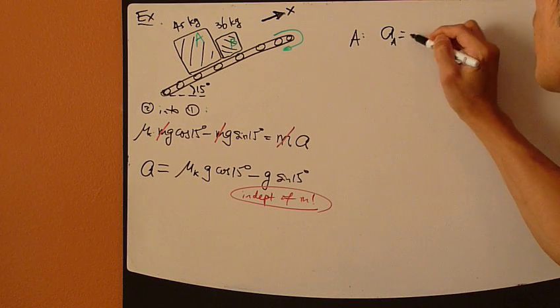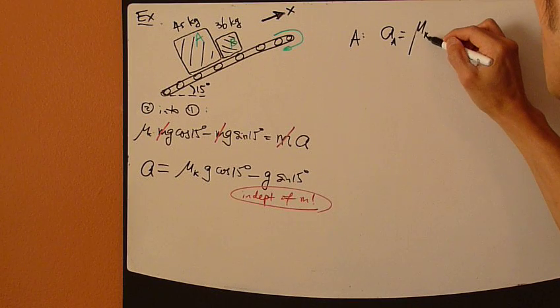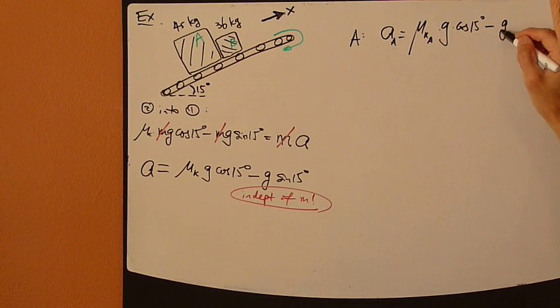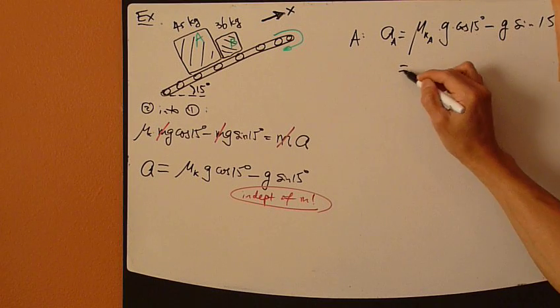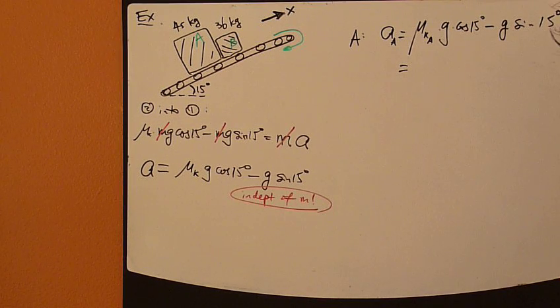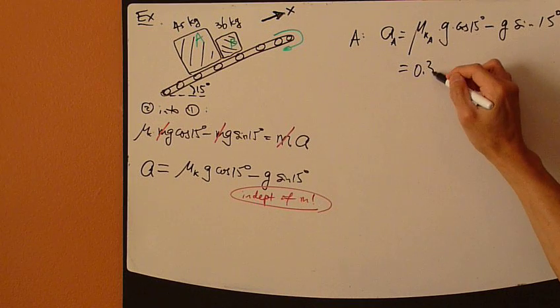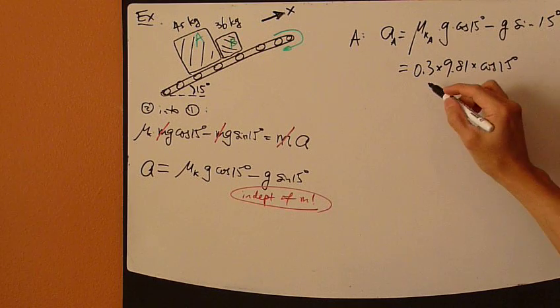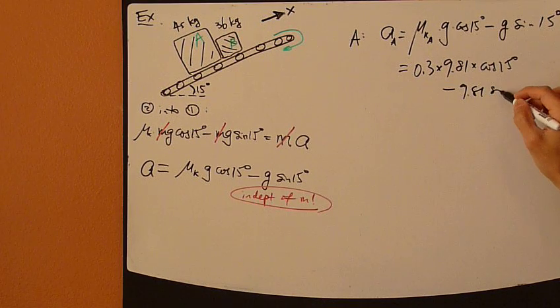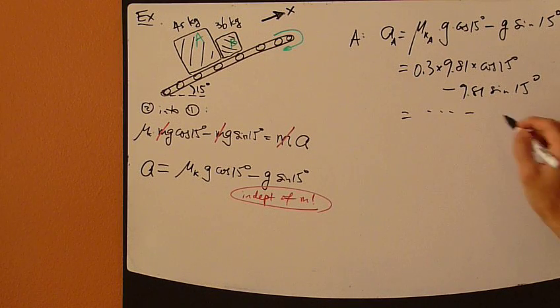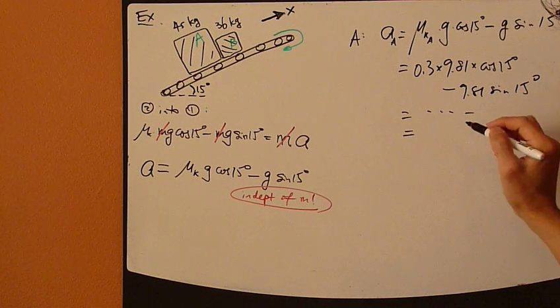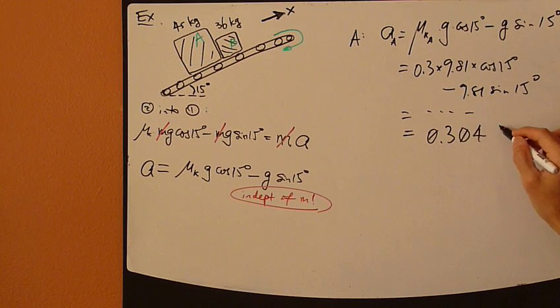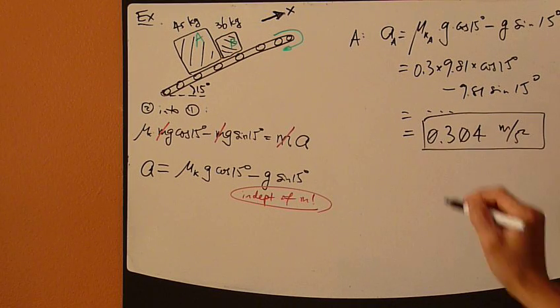we have a_A equals mu_K of A times g times cosine 15 minus g sine 15. So mu_K of A is given as 0.3 times 9.81 times cosine 15, and then minus 9.81 sine 15. Now I crunch numbers, take a calculator. a_A turns out as 0.304 meters per second squared.